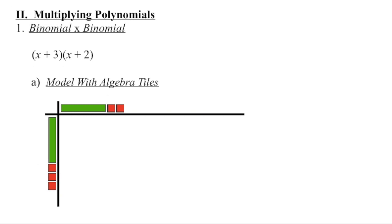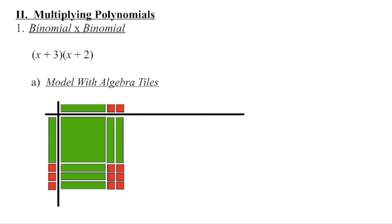What piece has a length of x and a height of x? We know positive times positive is also going to be positive. So we can go ahead and fill this in. What piece has a length of one unit times a height of x? When we're done, we can see that we end up with 1x squared.